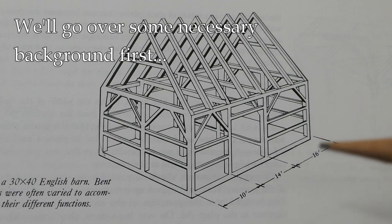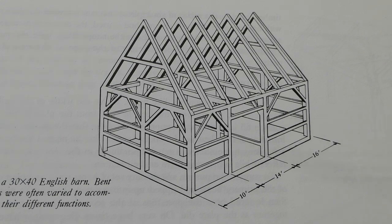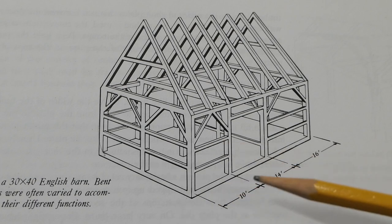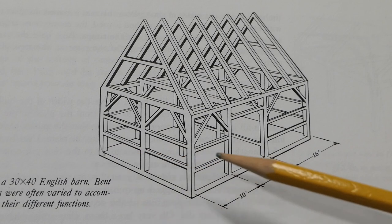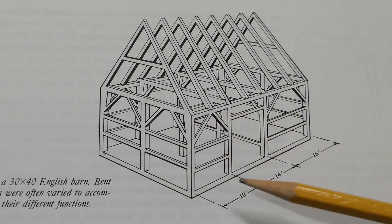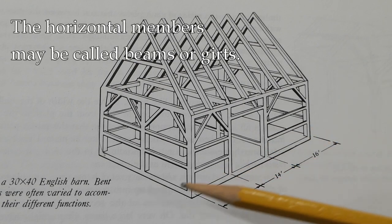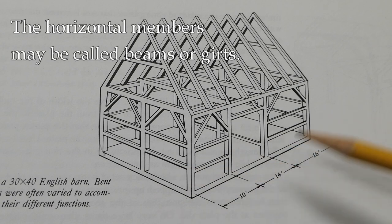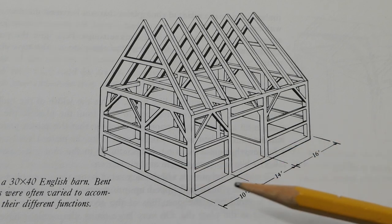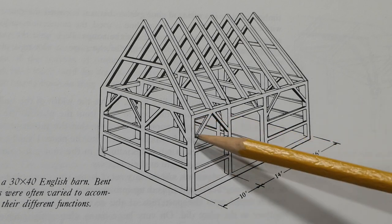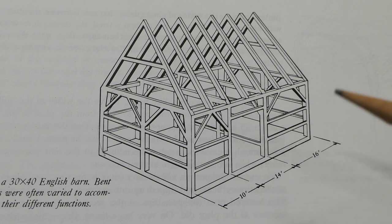Before we get into the project, I want to give a quick rundown of what a post and beam or timber frame looks like, because if you're not familiar with it, some of what I'm going to be talking about won't make sense. In a timber frame, instead of having stud walls like in modern construction, you have giant timbers — posts going up and down and beams going across. Corner posts on a house could be as big as 10 by 12 inches. Very big pieces of timber, sometimes with bark still on them.